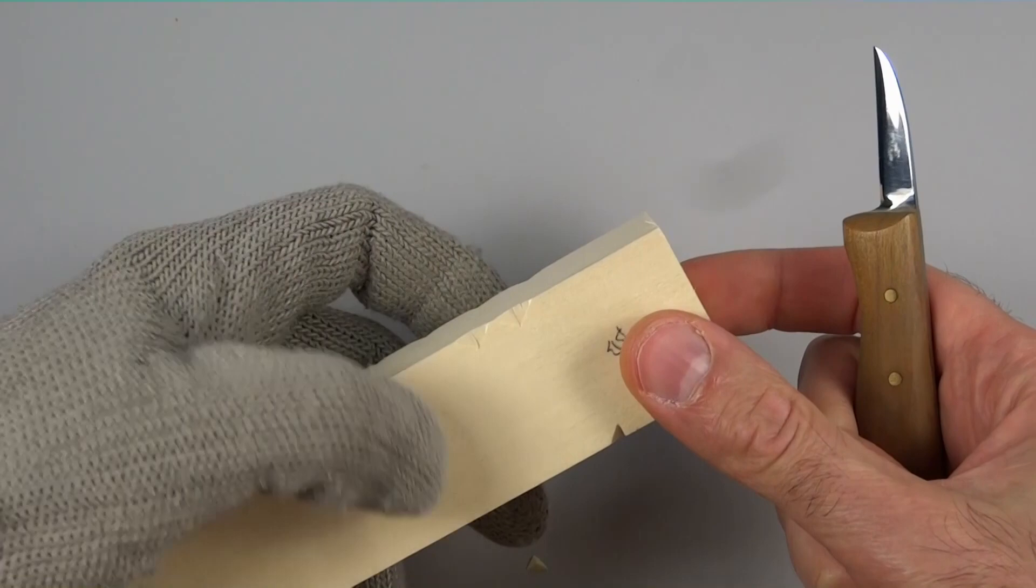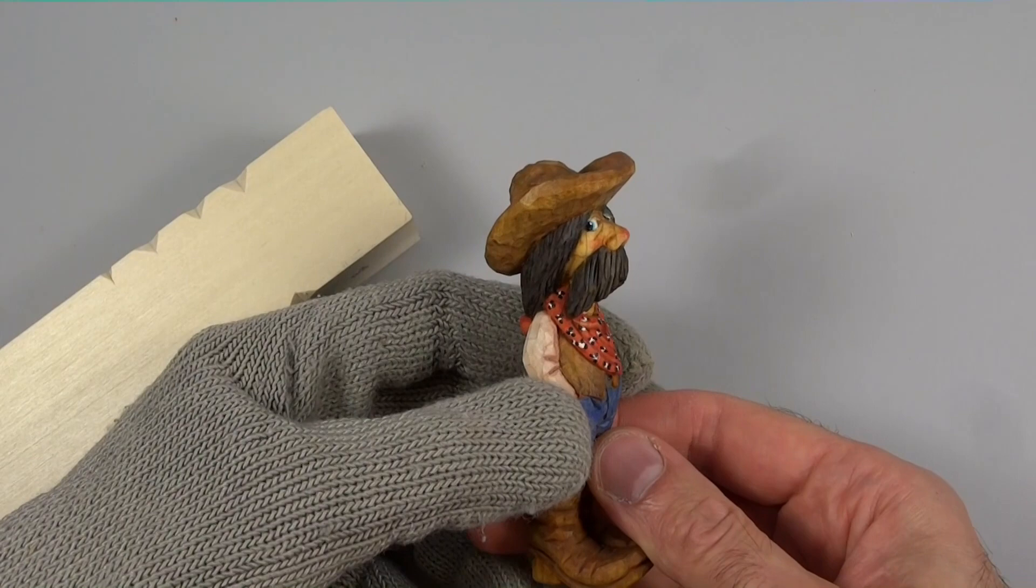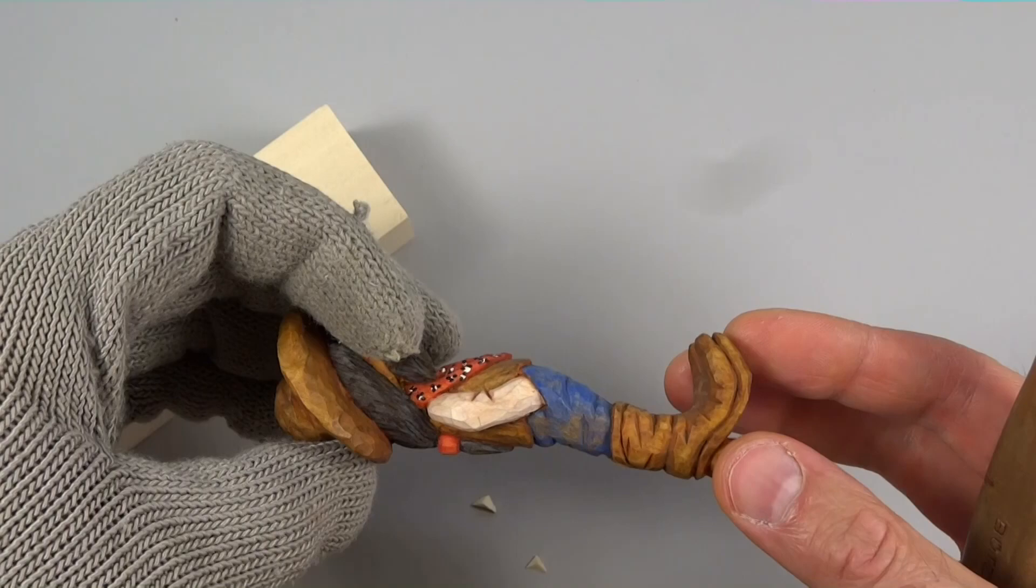This V cut is perfect for wrinkles on clothing and hair. Perfect example, see? The mustache, the hair, all the wrinkles. That was all done by V cuts.